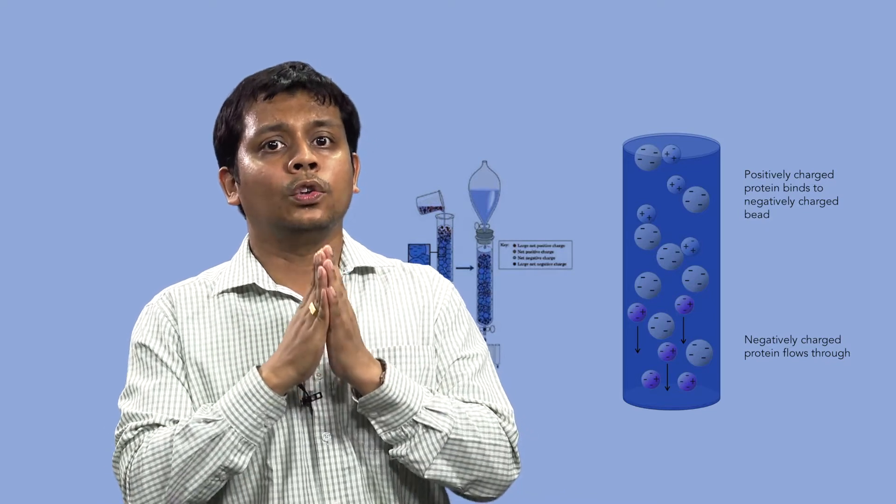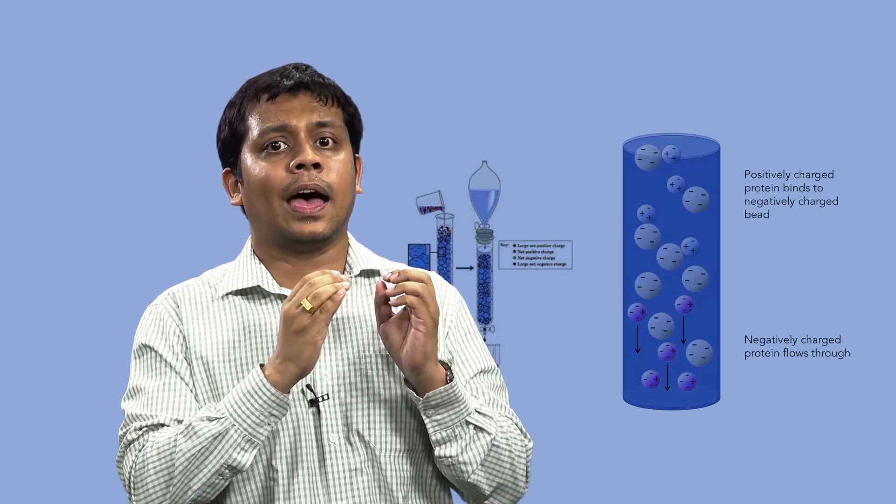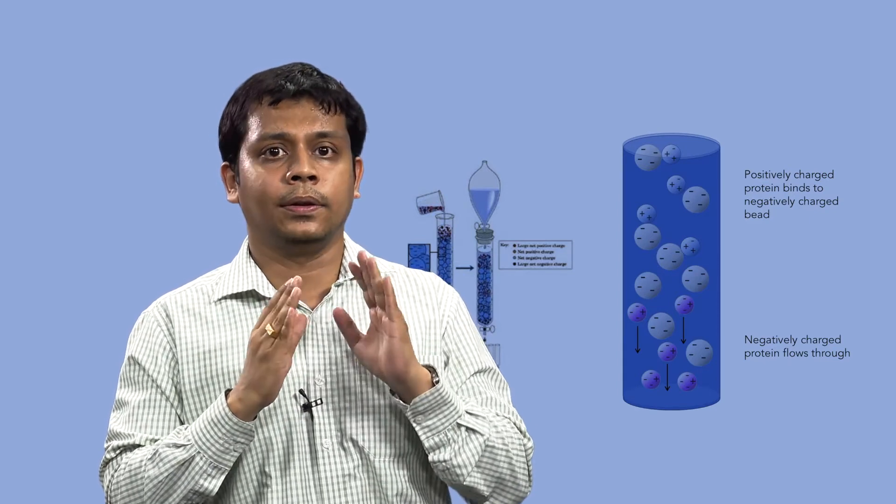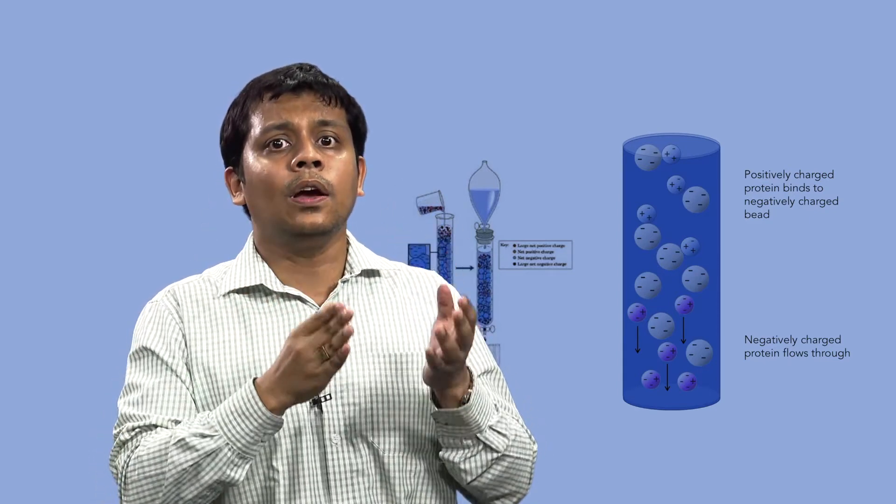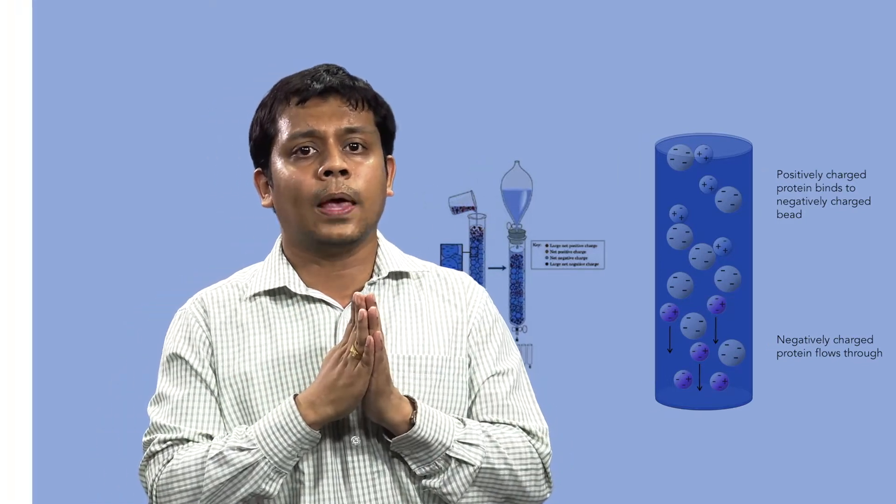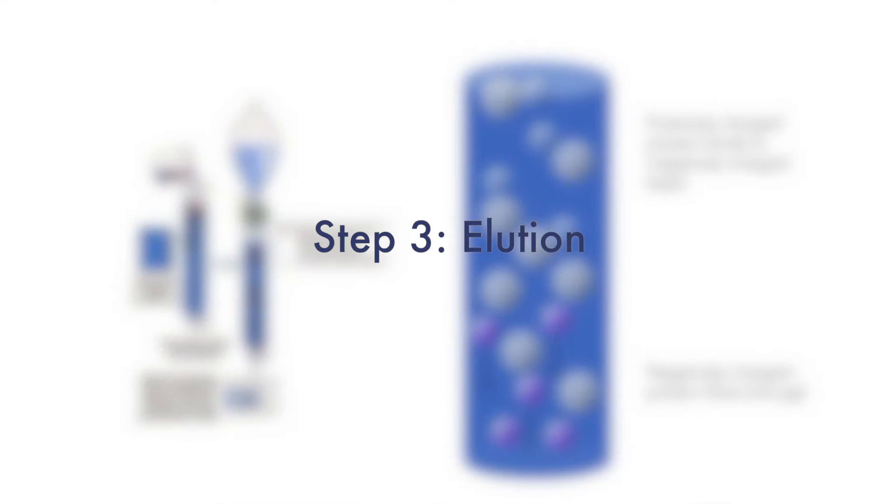Uncharged proteins or those with the same charge as the ionic group pass through the column at the same speed as the flow of buffer, eluting during or just after sample application depending on the total volume of sample loaded. Step 3: Elution.